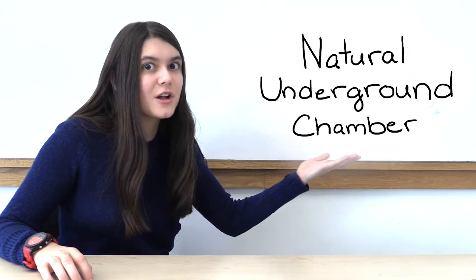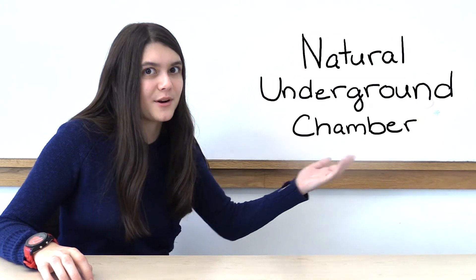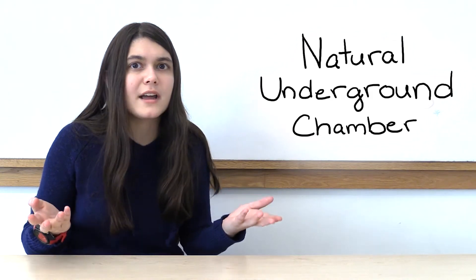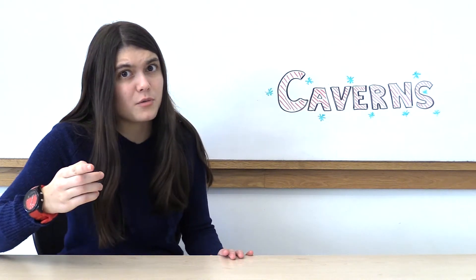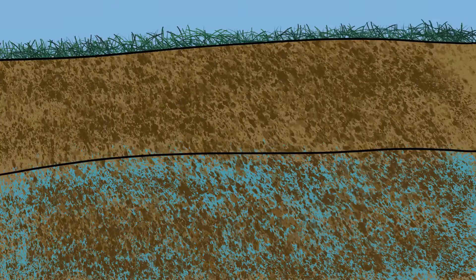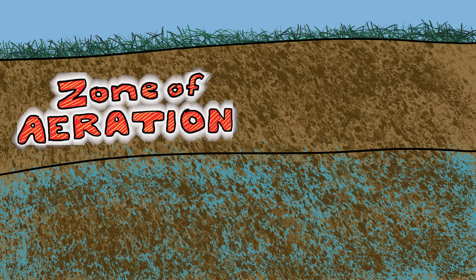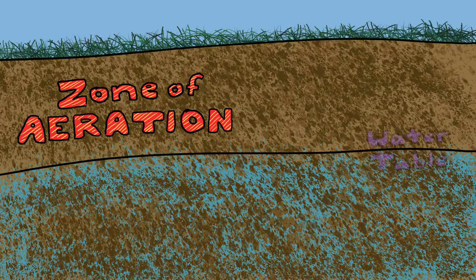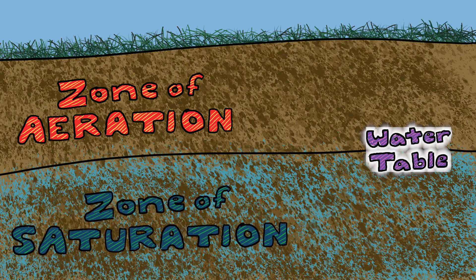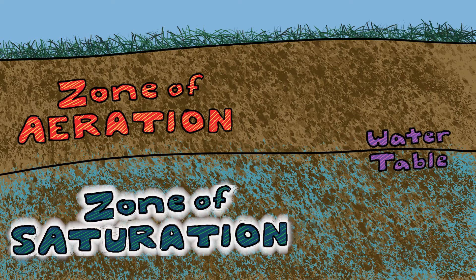A cavern is defined as a natural underground chamber. But before we can go into how and why they form, we need to do a little review of groundwater. The top portion of the soil is called the Zone of Aeration, also known as soil that doesn't have water in it. If you go a little deeper, you meet the water table, which is the line between the Zone of Aeration and the Zone of Saturation. Just below this, in the Zone of Saturation, water fills all of the little holes in between rocks and sediment.